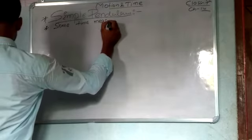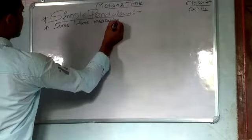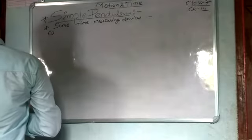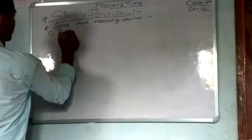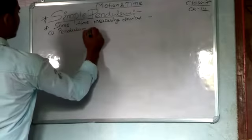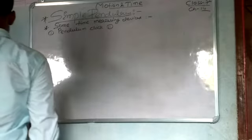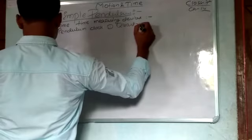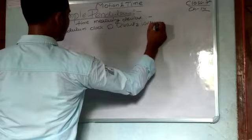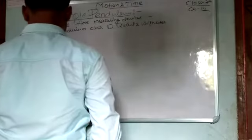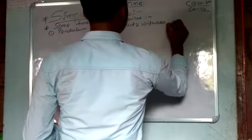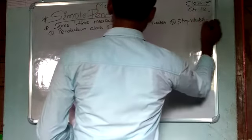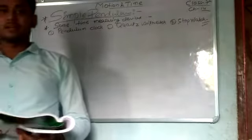Some time-measuring devices are: first, the pendulum clock; second, the wristwatch; and third, the stopwatch. The stopwatch also measures time, but it only measures short intervals of time.